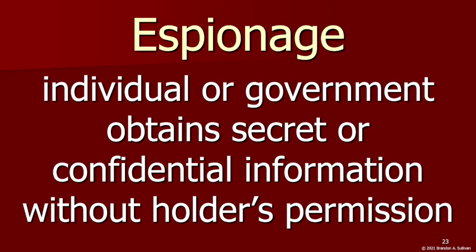Next, there is espionage, more commonly referred to as spying — when an individual or government obtains secret or confidential information without the holder's permission. Governments are engaged in espionage against one another all the time; it's just referred to by a different name: intelligence. But if a spy is caught by another country, they can be punished by that nation's criminal justice system, unless some type of diplomatic solution can be reached. Within countries, espionage can cross the line into illegal surveillance or gathering information on citizens. And it isn't restricted to state actors — industrial espionage is carried out by and against companies to get information that can be sold, used for strategic competitive advantage, or for sabotage.